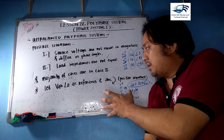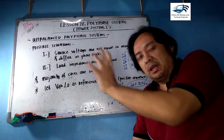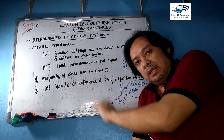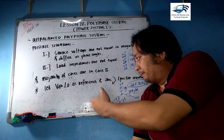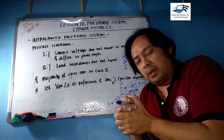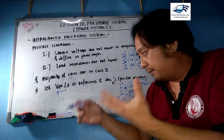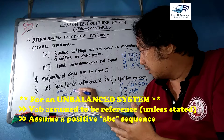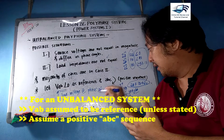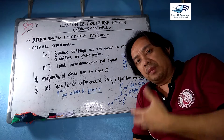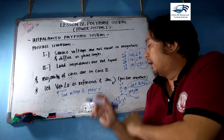The majority of cases — approximately 80 percent — fall under Case Two (unequal load impedances), while about 20 percent involve unequal sources. To solve these problems, we need a reference. We can assume Vab as our reference, which is the line voltage at phase A.